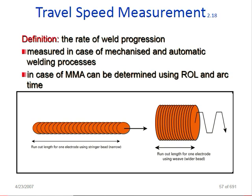Travel speed measurement definition: the rate of weld progression — how much welding is done in a given time, such as per minute or per 30 minutes. Measured in mechanized and automatic welding processes. For manual welding, it can be determined using run-out length and arc time. Run-out length is the distance one electrode can travel from start to finish in a stringer bead. For weave beads, the run-out length using a weaving technique is measured similarly.